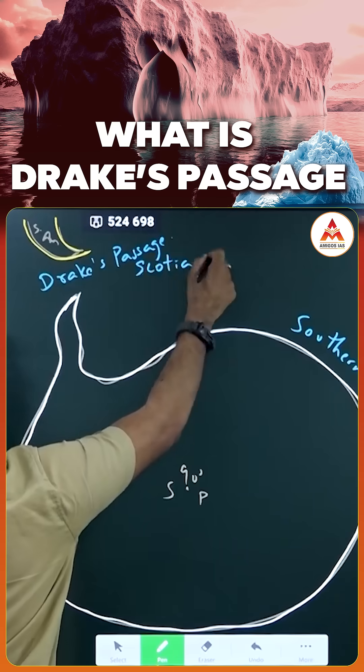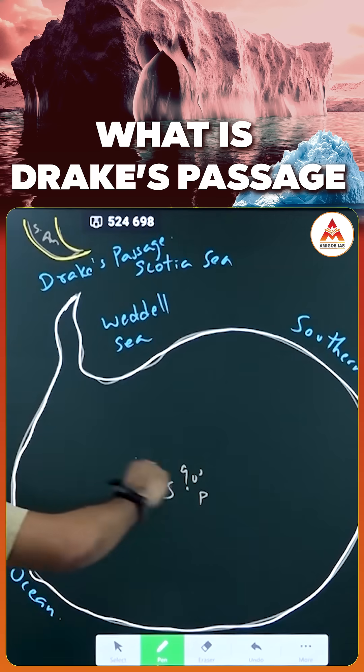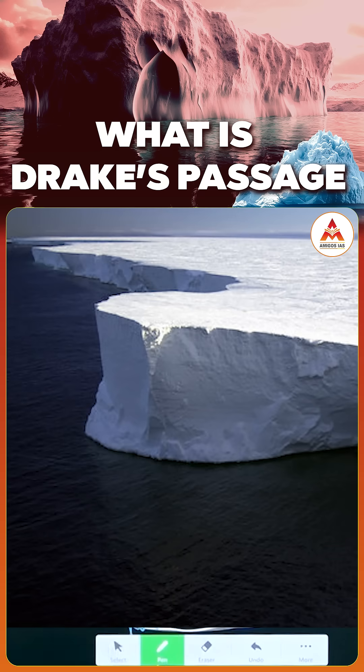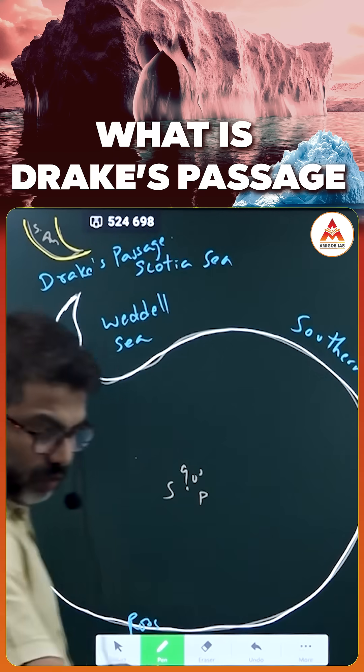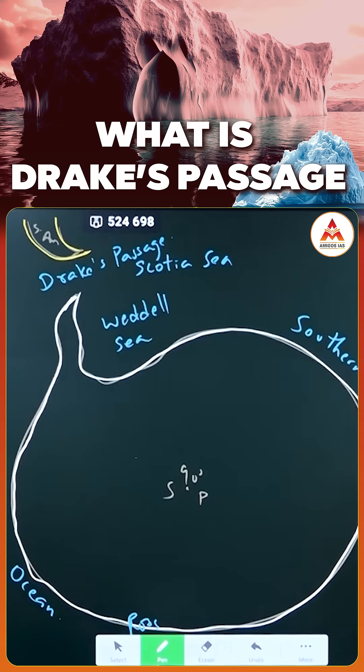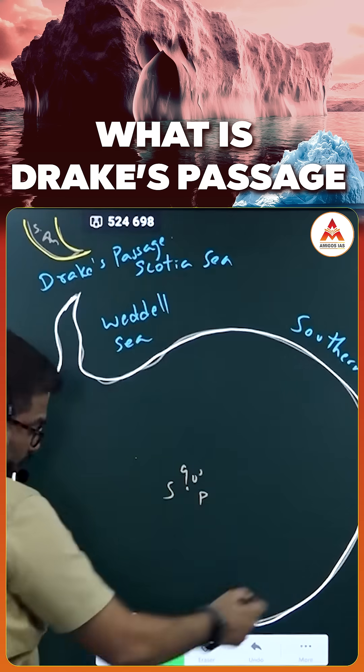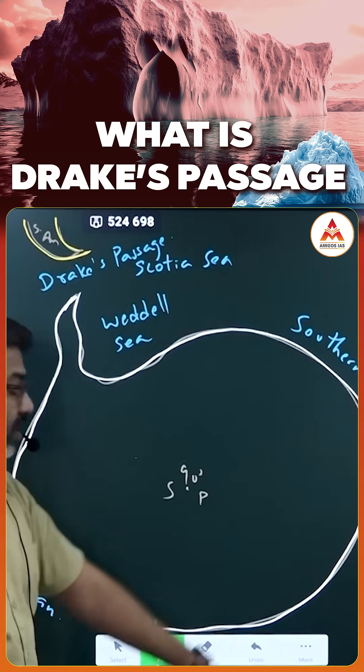Notice the water bodies here: Scotia Sea, Weddell Sea, Amundsen Sea, Bilunshan Sea. Around Antarctica you can notice lot of water bodies - small Ross Sea, Davies Sea. Around Antarctica you get lot of water bodies: Amundsen, Weddell Sea, Ross Sea, Bilunshan Sea - all these are the surrounding water bodies of Antarctica.